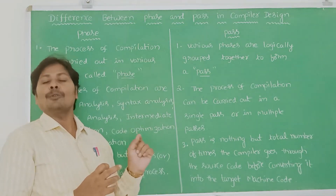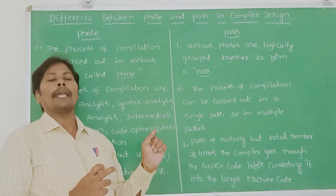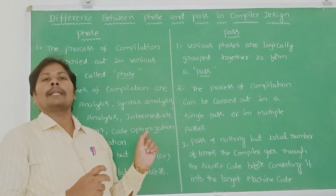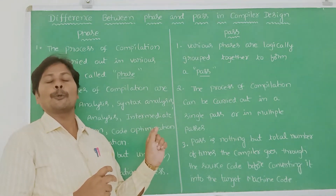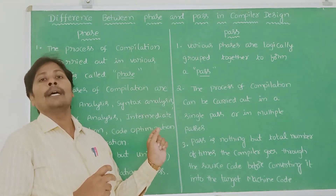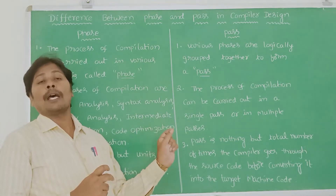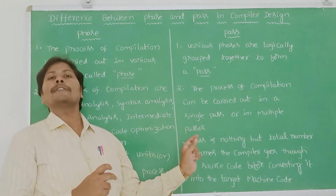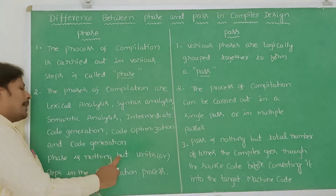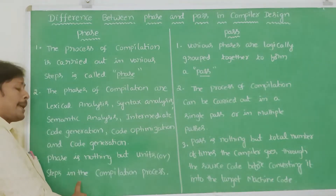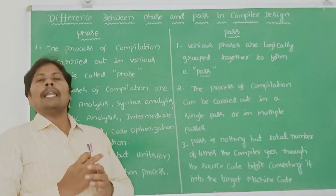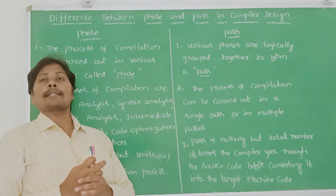Next, in the case of pass, the process of compilation can be carried out either in a single pass or in multiple passes. In the single pass compiler, the compiler goes through the source program only once, whereas in the case of a multi-pass compiler, the compiler goes through the source program several number of times.